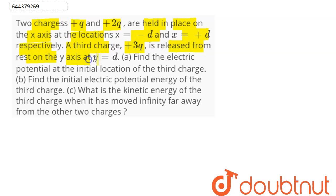Find the electric potential at the initial location of the third charge. So, question says here there are two charges, q and 2q, placed at minus d and plus d, and here there is a charge plus 3q at y equal to d.